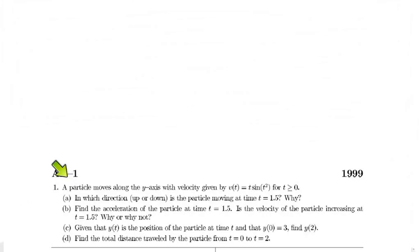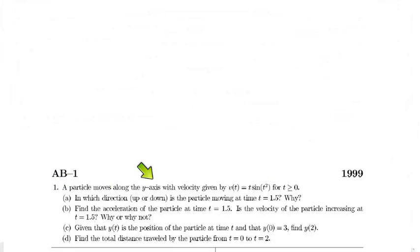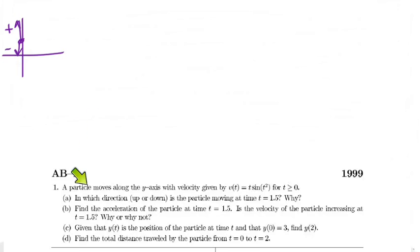We have a particle moving along the y-axis with velocity given by a function, where t is greater than or equal to zero. The important thing here is that because we're moving along the y-axis, we're moving up and down. When we're going up, we're going at a positive speed, and when we're going down, we're going at a negative speed.